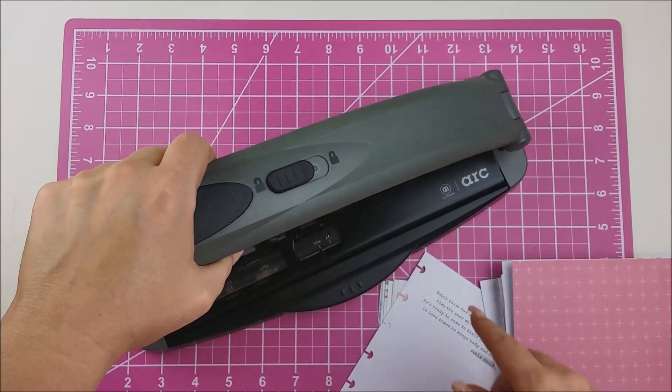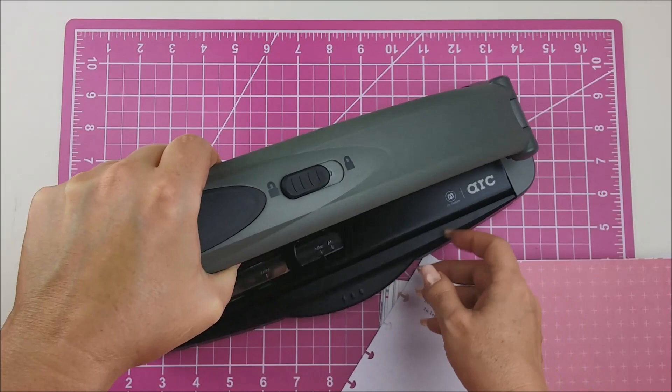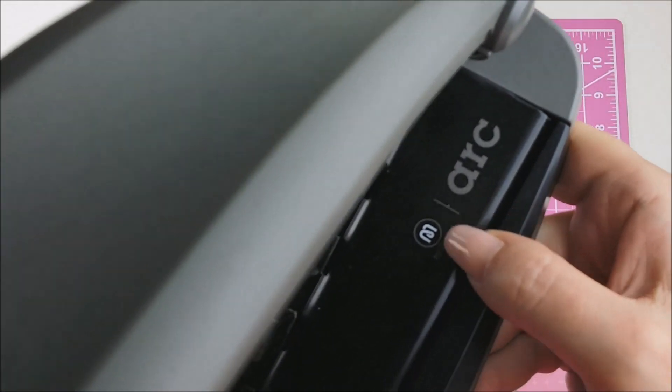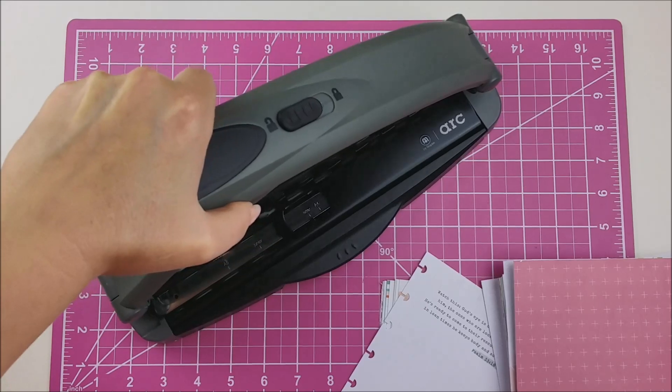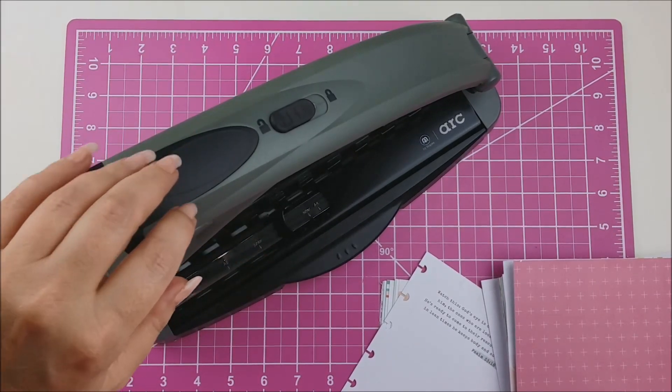Okay, so here is my paper punch and it is an arc by Staples. I don't know if you can see that. I'll put a link for it. I got it off Amazon. It says by Staples, but it's ARC. This is a heavy duty paper punch that I use for my Happy Planners.